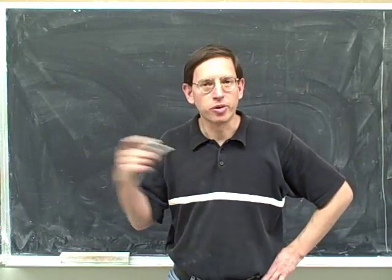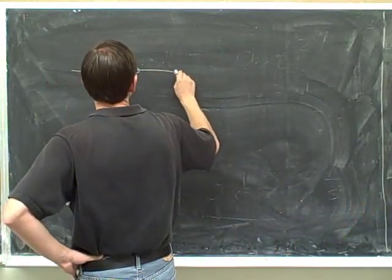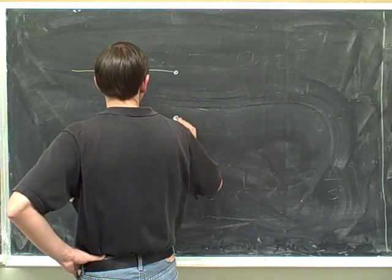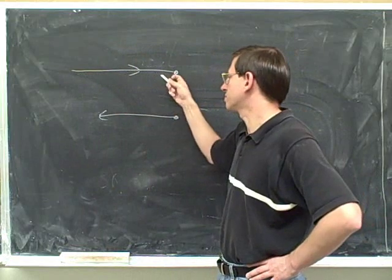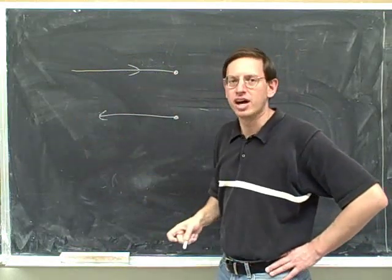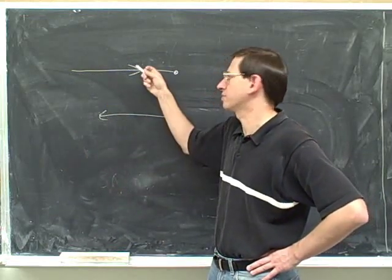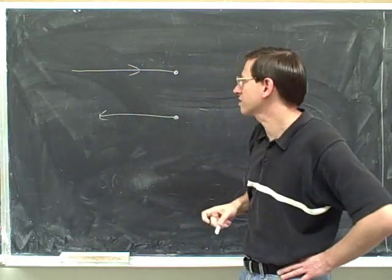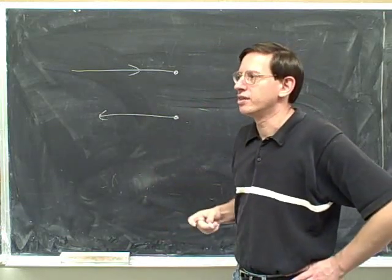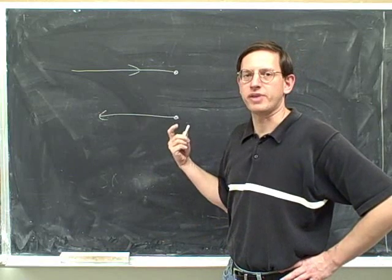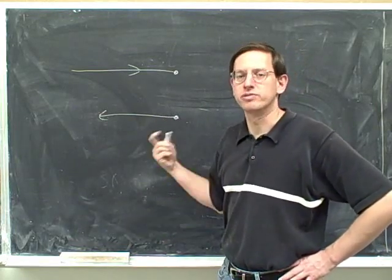Let me try to give you one more explanation for why that is. So let's say this is the path of the object — at first it's moving to the right, and then it's moving to the left along the same path, but I'll put the return path below so it doesn't overlap with the outward path. We can split this into three portions: the portion before you reverse direction, the portion after you reverse direction, and the instant when you reverse direction.